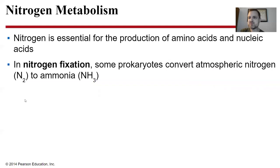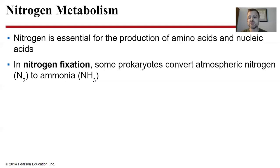Nitrogen fixation: our atmosphere is about 75% nitrogen as N2 gas. All life needs nitrogen for DNA and proteins, but the triple bond of N2 can't be broken by our enzymes — we need it as ammonia, ammonium ion, nitrate, or nitrite. The only life on Earth that converts N2 into usable nitrogen is bacteria, making them vital to all life including plants. Plants rely upon nitrogen-fixing bacteria in root nodules, which convert atmospheric nitrogen into ammonia or other usable forms.